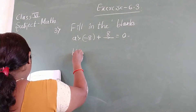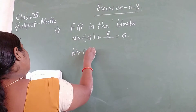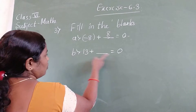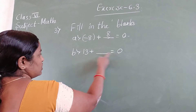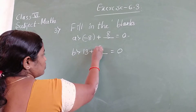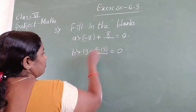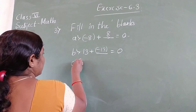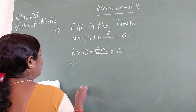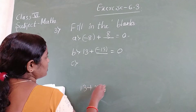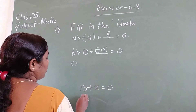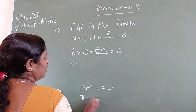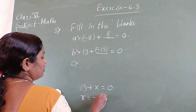Part B: 13 plus dash equals 0. To get 0, subtract the same number — answer is minus 13. Another method: 13 plus x equals 0, send 13 to the other side, it becomes minus 13. Answer is minus 13.